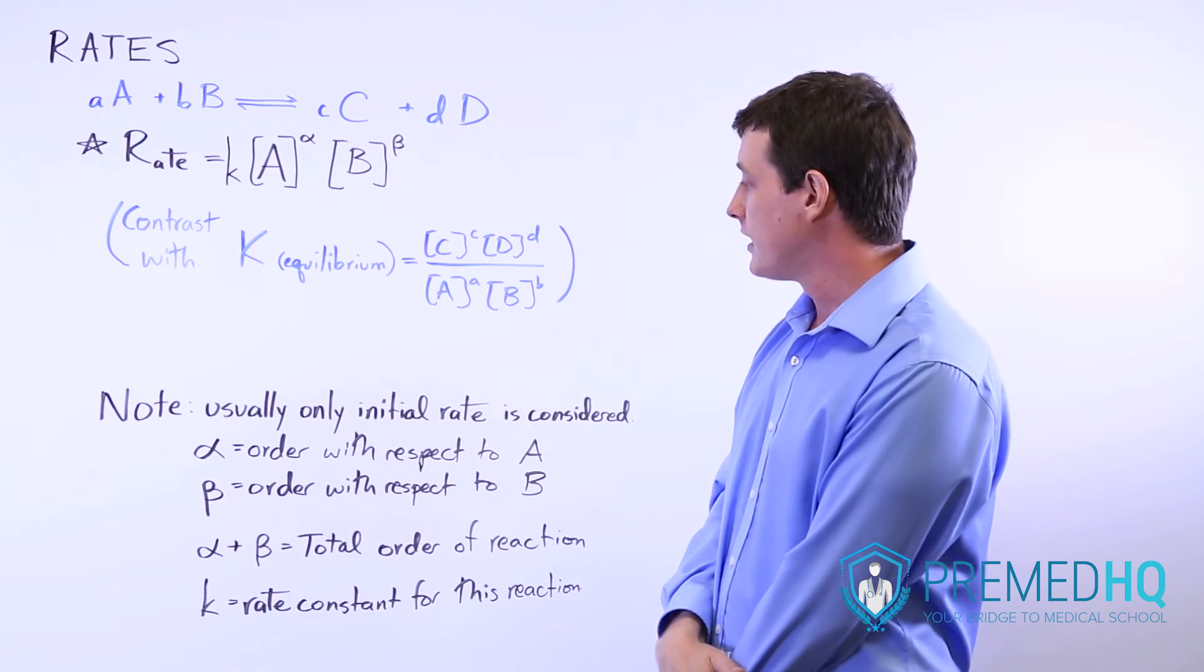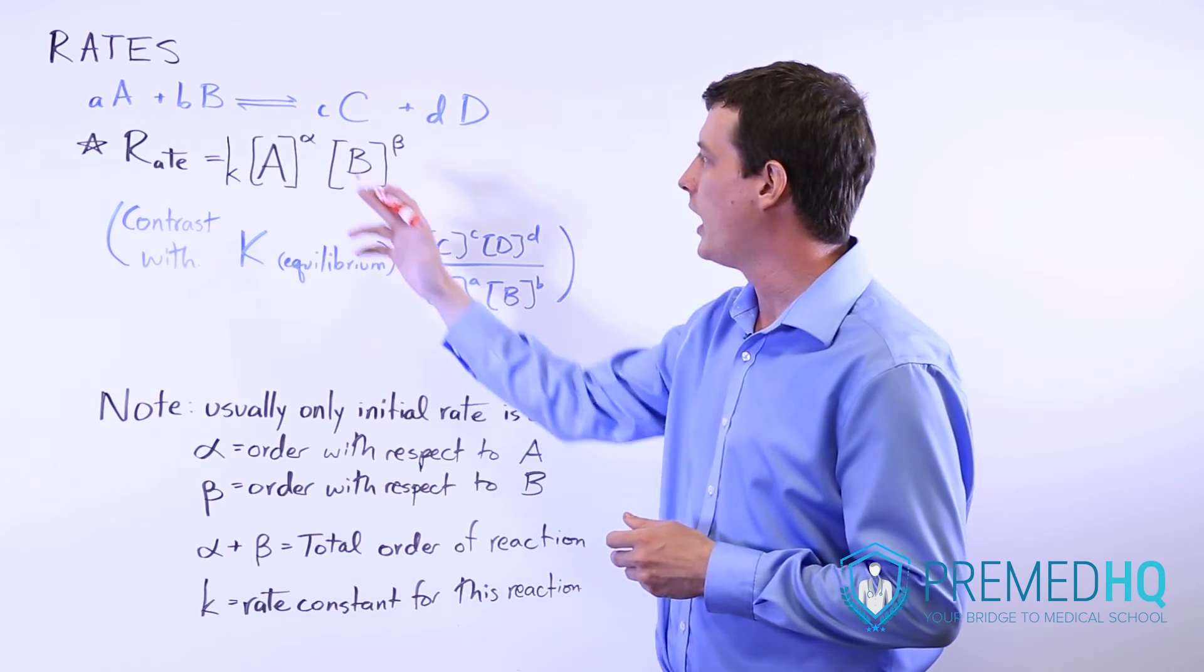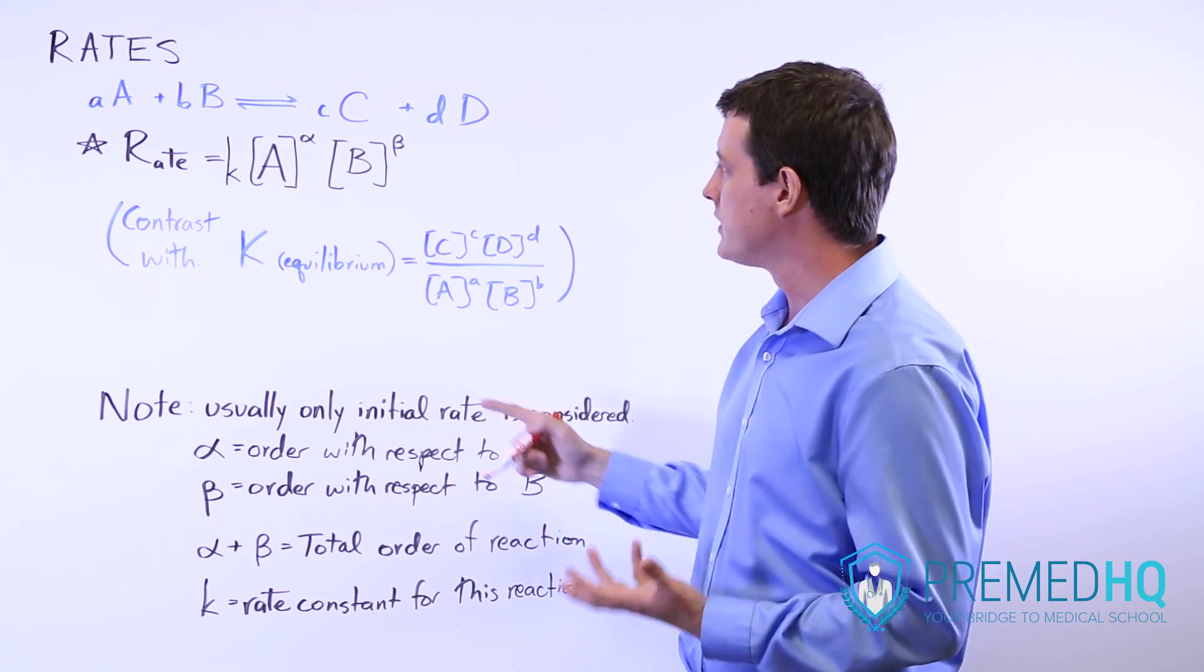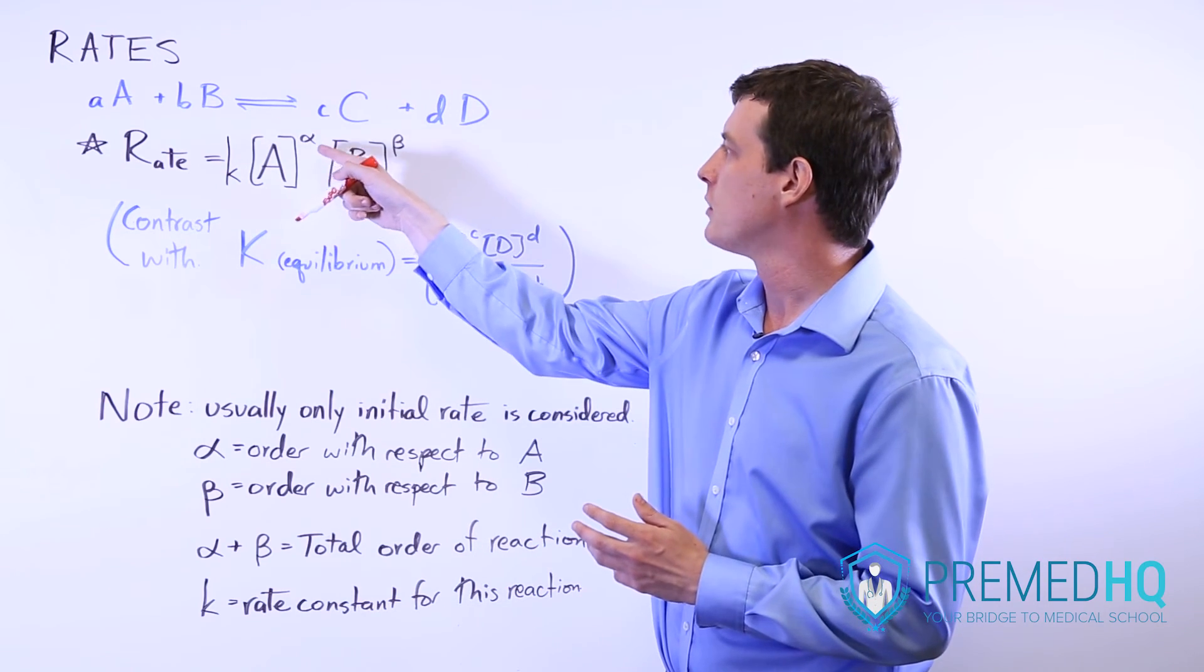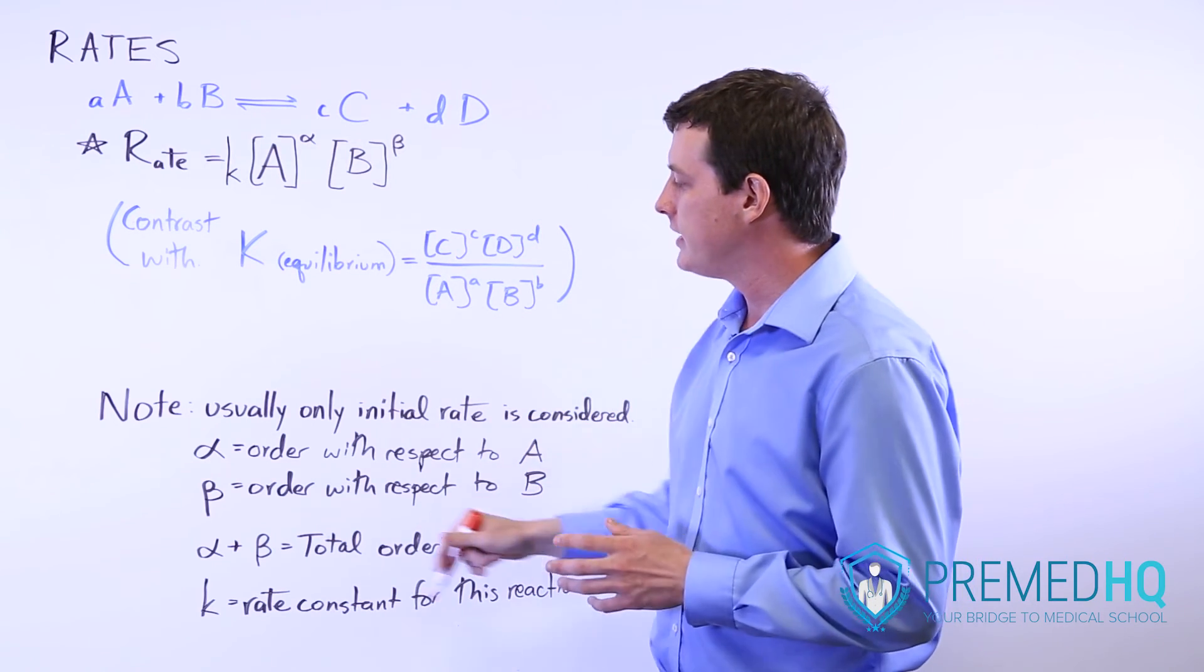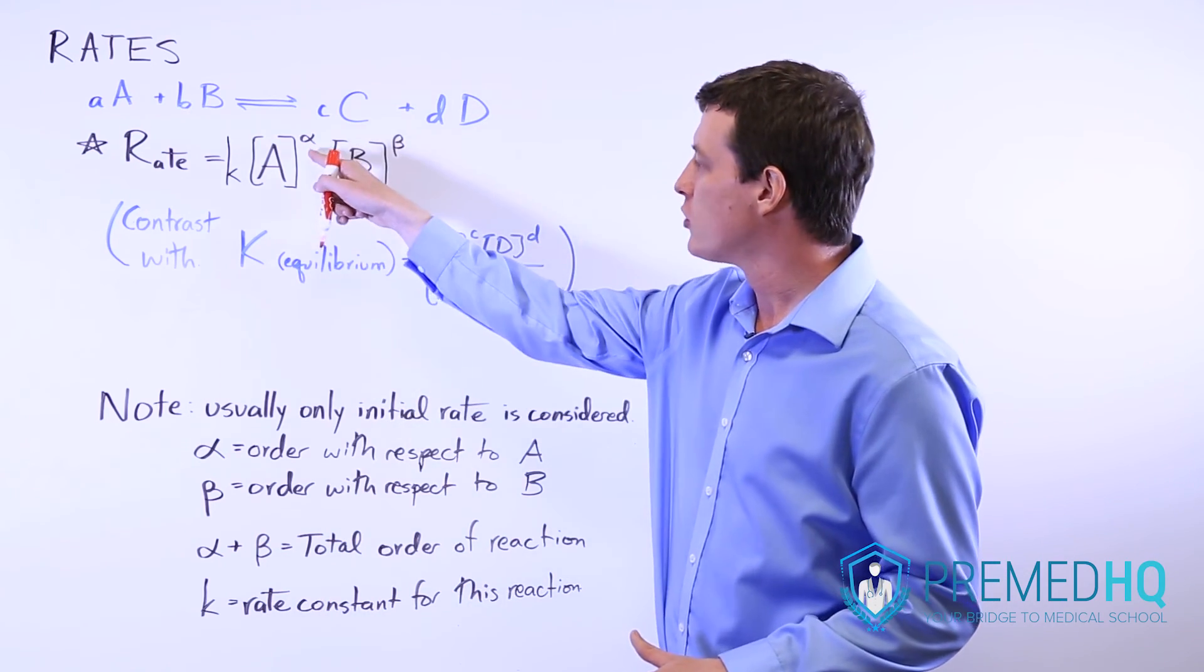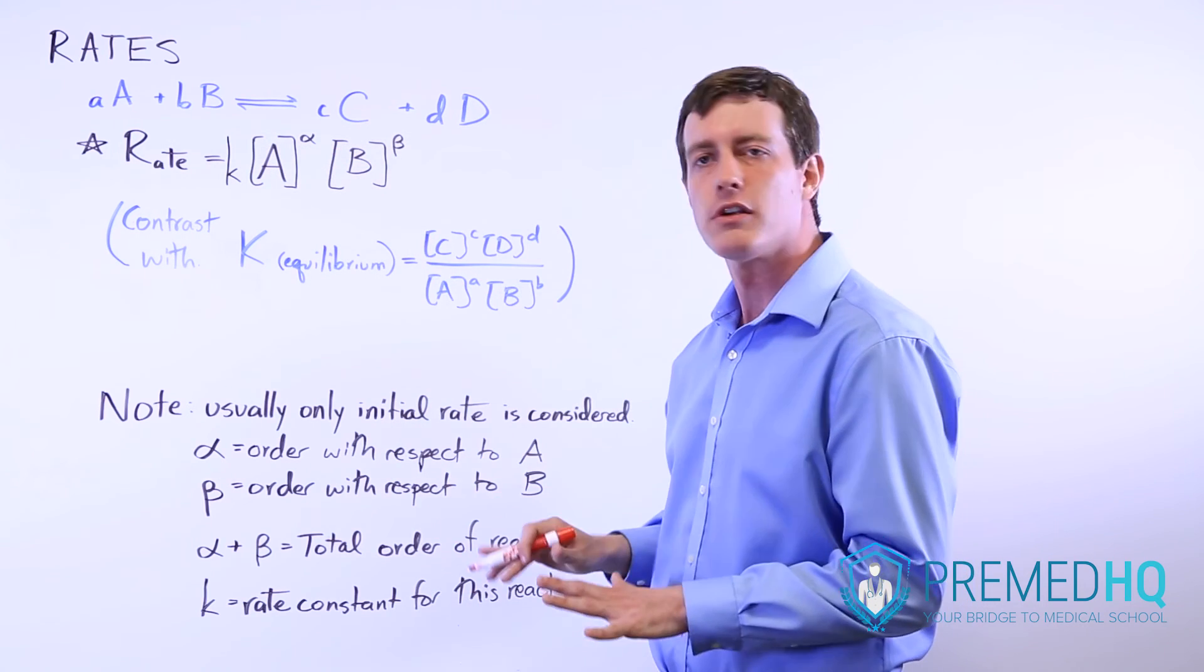The last thing to recognize is that alpha and beta are referred to as the orders of the reaction. So alpha is the order of the rate law with respect to reactant A, and beta is the order with respect to reactant B. So it could be first order with respect to A, perhaps second order with respect to B, and if you add alpha and beta together, then you have the total order of the reaction. So if it's first order for A and second order for B, then the total order of the reaction is third order.